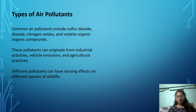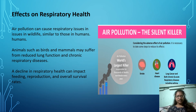Types of air pollutants: common air pollutants include sulfur dioxide, nitrogen oxides, and volatile organic compounds. These pollutants can originate from industrial activities, vehicle emissions, and agricultural practices. Different pollutants can have varying effects on different species of wildlife.